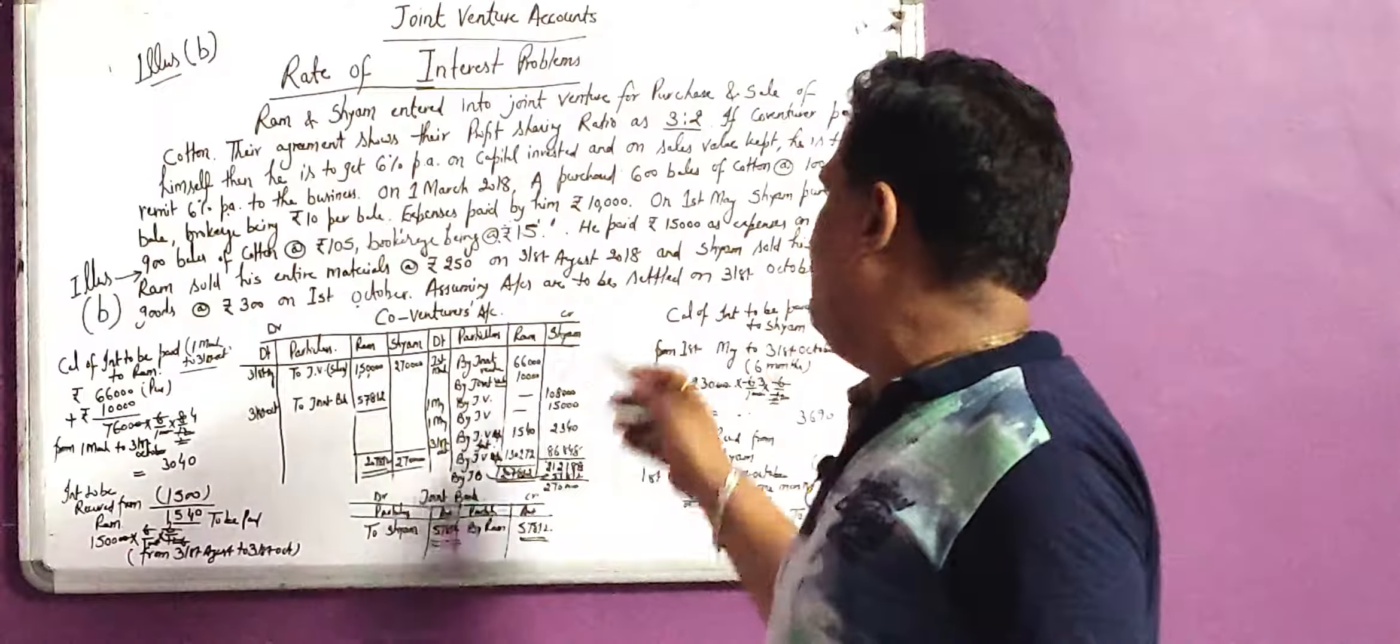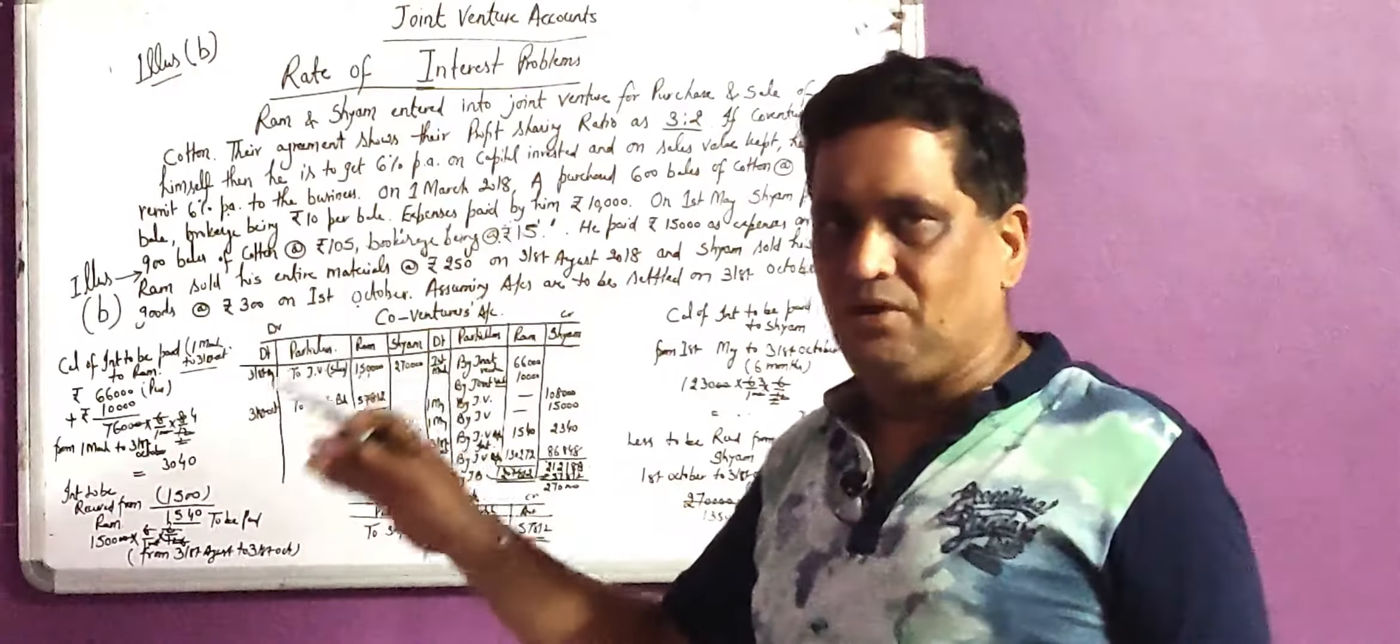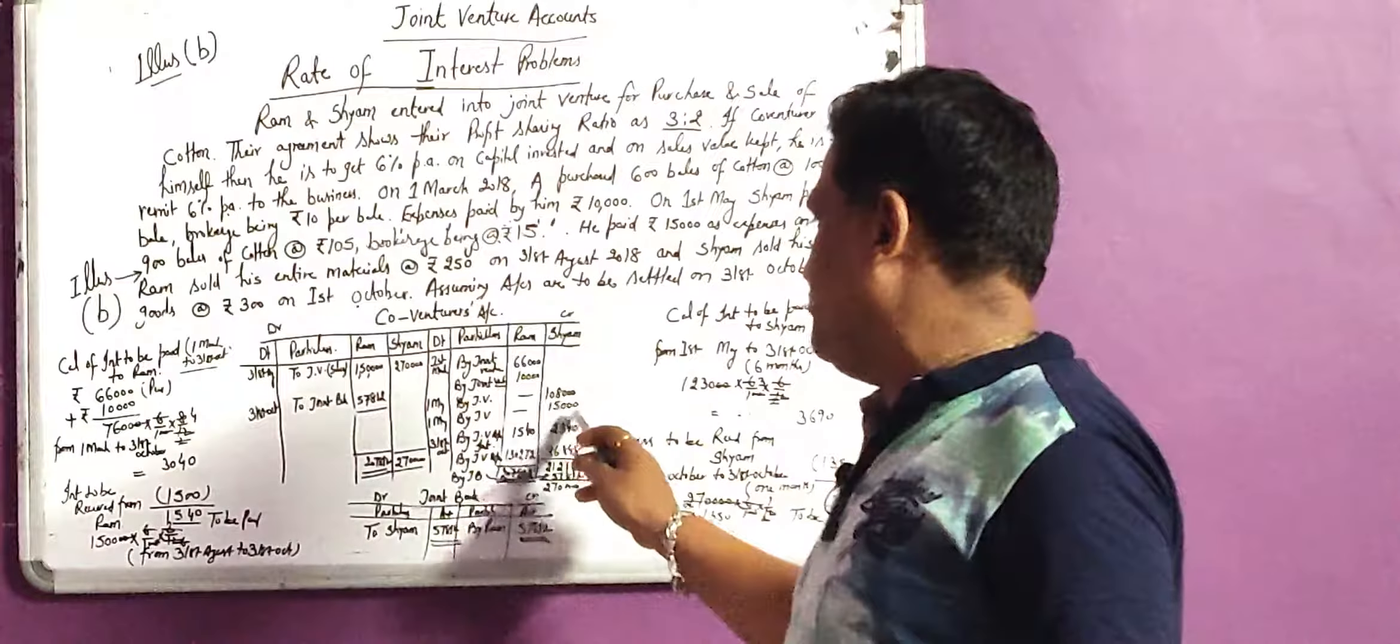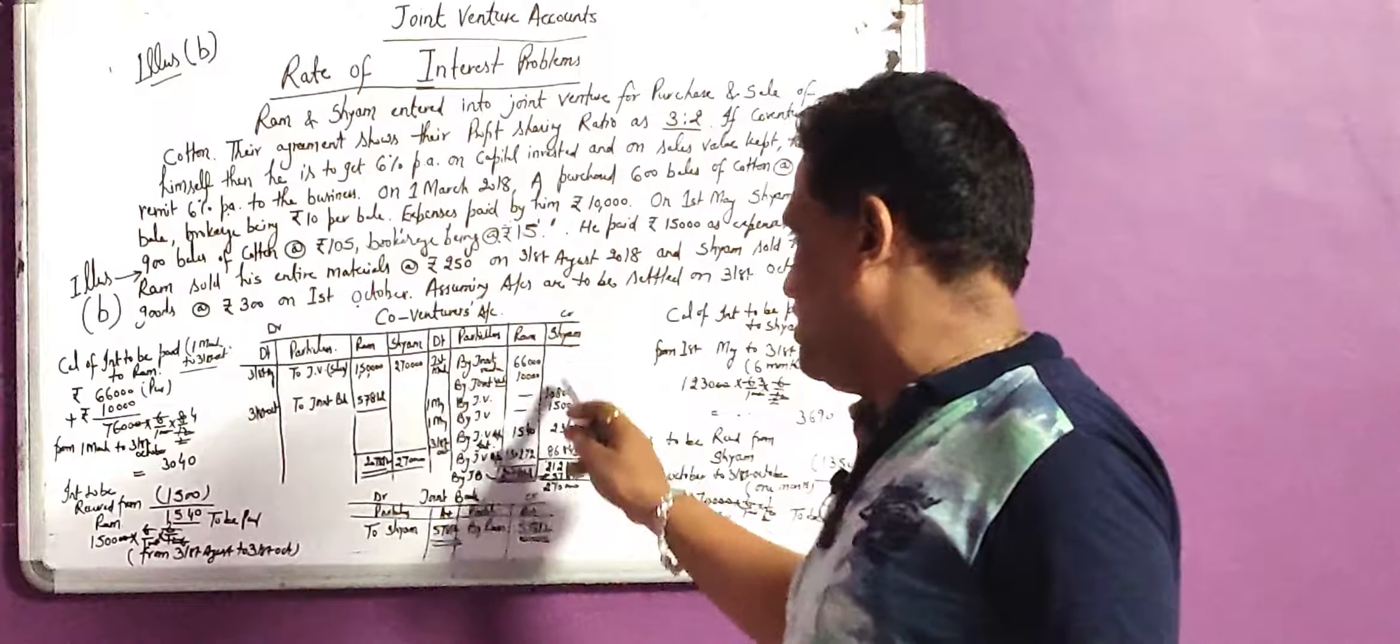Similarly, Sham has 15,000 expenditure incurred. Now we have to do it by joint venture that will be 15,000 in the case of Sham. This will be credit.